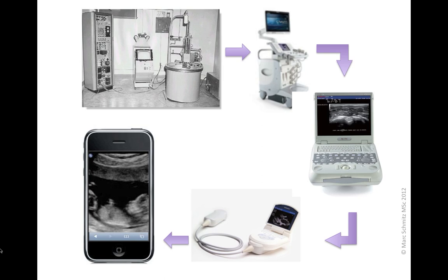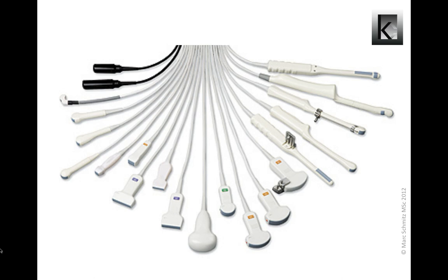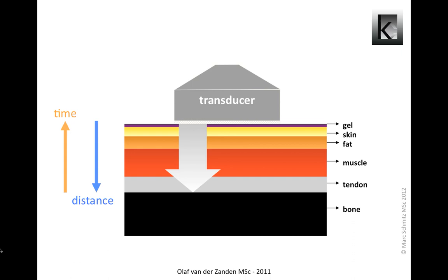Ultrasound technology is rapidly advancing and being refined, aimed at both increasing image quality and opening new fields of applications. So what equipment do we need for MSU? First of all we need a transducer. Transducers come in various shapes and dimensions — small transducers for smaller body parts, convex transducers for abdominal ultrasound, thin long transducers for intra-cavity assessments, and the straight linear transducers we generally use in MSU.